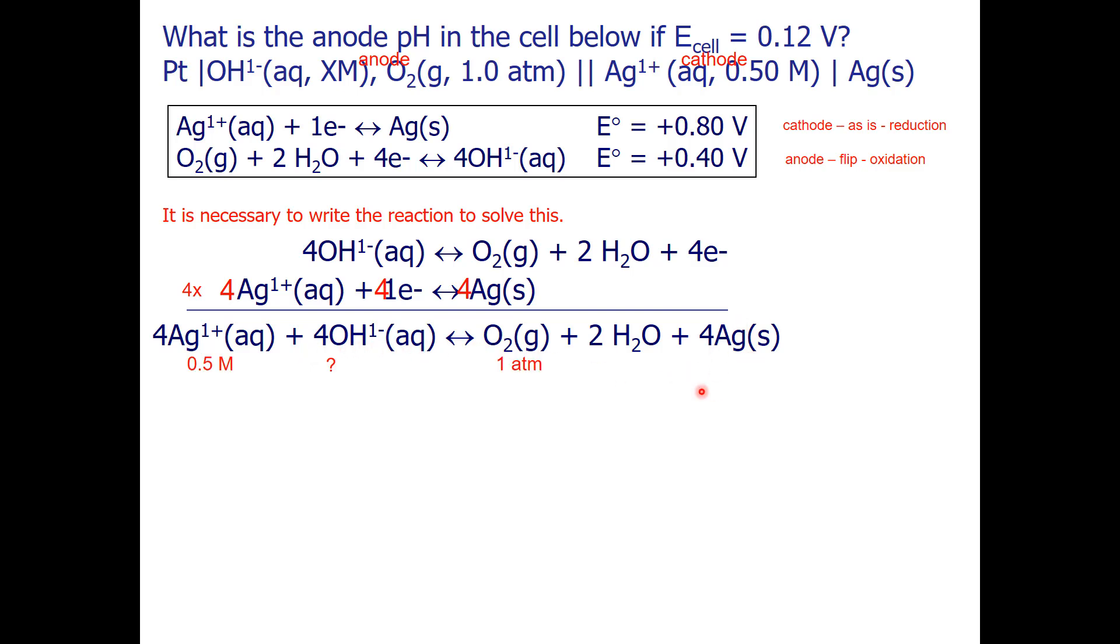From the information in the cell notation, I have the concentration of the silver ion, the pressure of the oxygen, and I am trying to figure out the hydroxide concentration so that I can get the pH.